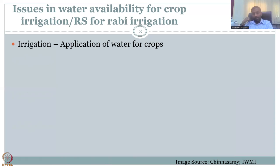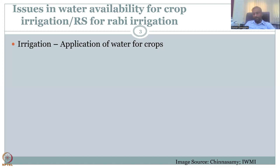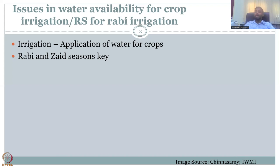Anything you apply to crops counts as irrigation. The opposite is nature-based systems — rainfall or dew. Cash crops like sugarcane are especially important; sugarcane is not a monsoon crop and grows for 12 to 18 months, consuming a lot of water. The Rabi and Zaid seasons are the key irrigation cycles — they are supported by irrigation, not the monsoon.